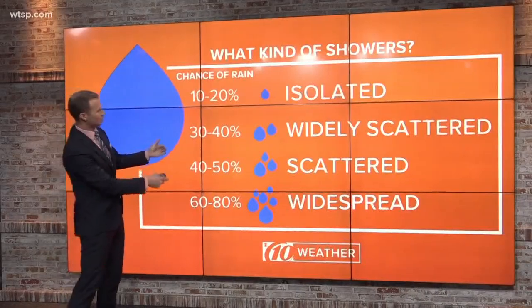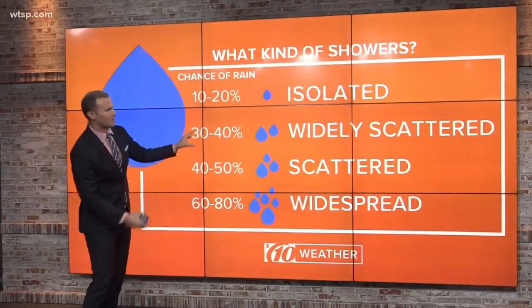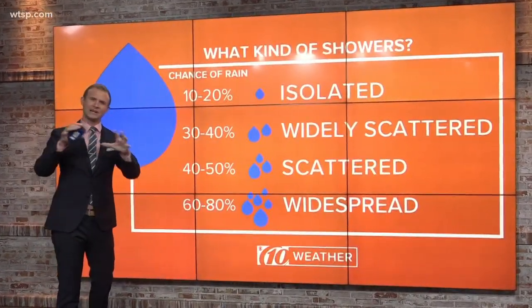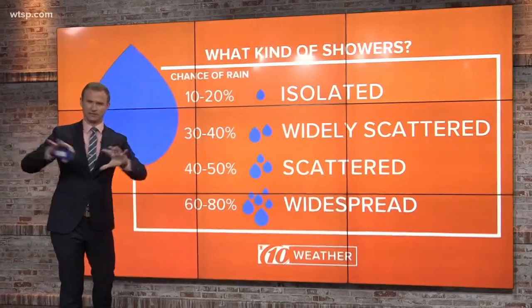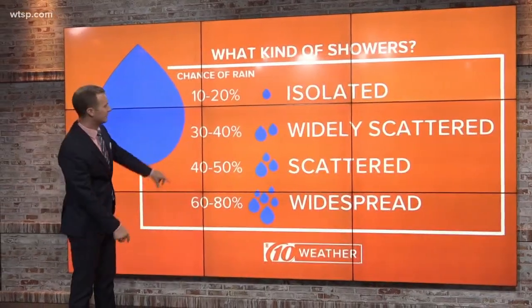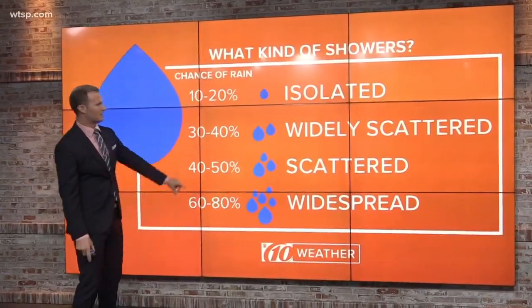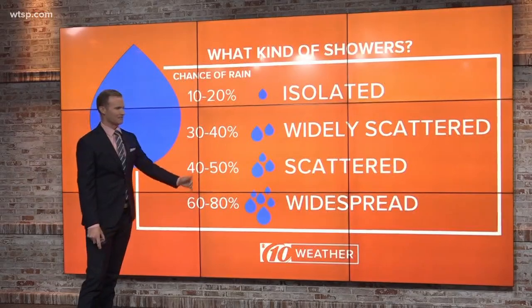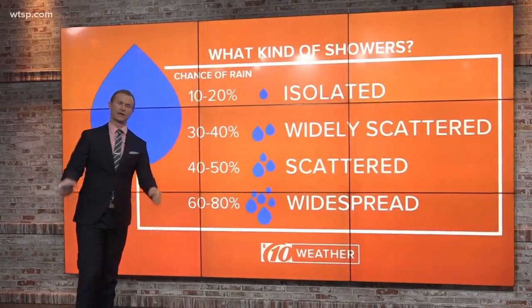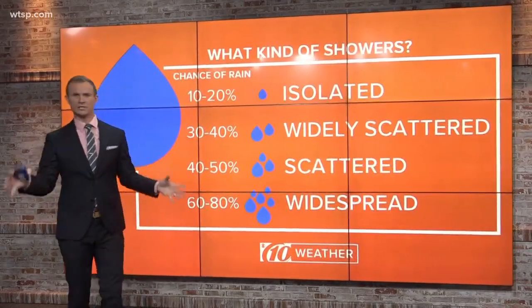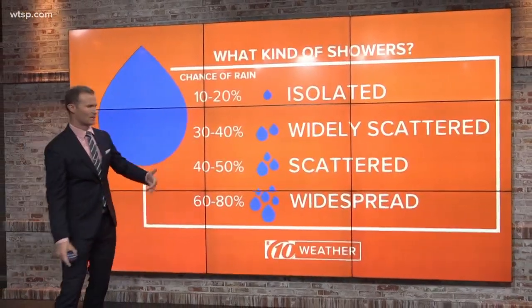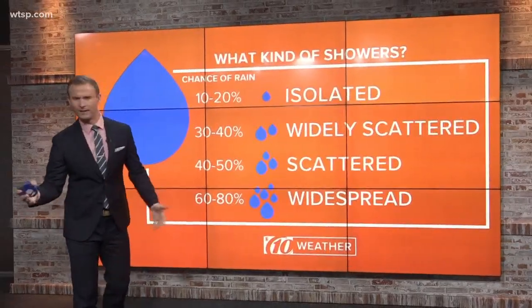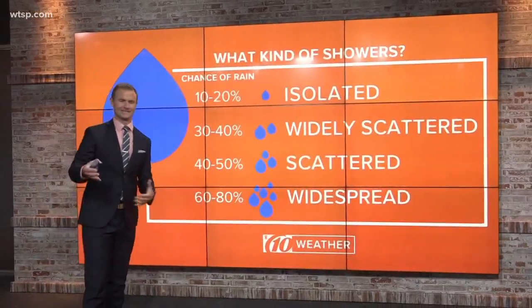As we start seeing more of that 30 to 40% chance, more widely scattered — scattered, but scattered widely across the area. At 40 to 50% chance of rain, scattered showers. And then once you get up to 60 to 80% chance of rain, widespread showers. Above that, as we get closer to that 100% chance of rain, we're just going to say it's going to rain, or maybe rain is likely.